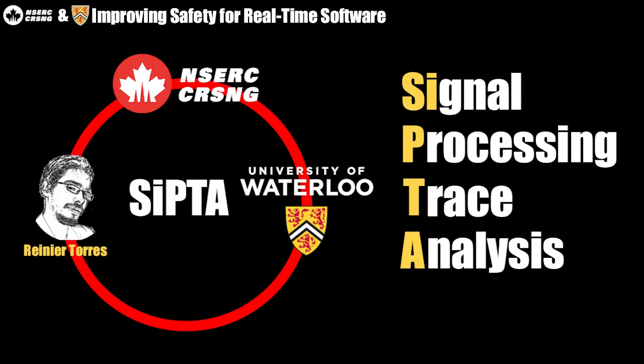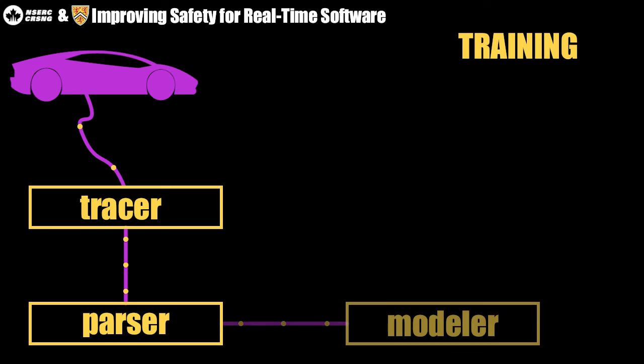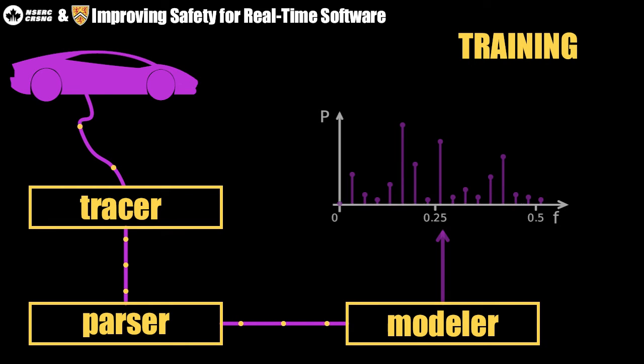ZIPTA is an anomaly detection engine. ZIPTA performs anomaly detection in two stages. During the modeling stage, first collects data from the system and prepares it for signal processing, then models normal behavior.